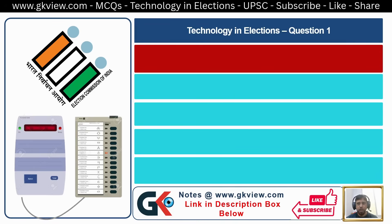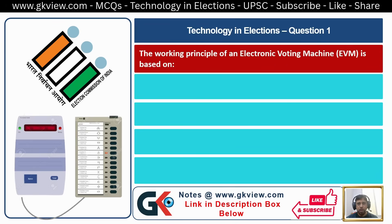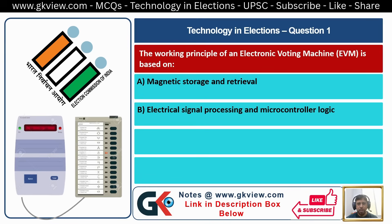Technology in Elections, Question Number 1. The working principle of an electronic voting machine is based on: A. Magnetic storage and retrieval, B. Electrical signal processing and microcontroller logic, C. Optical character recognition, D. Barcode scanning. The answer is B: Electrical signal processing and microcontroller logic.